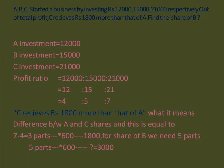C receives 1,800 more than A — this 1,800 is the difference between A and C's profit. In the profit ratio, the difference between A and C is 7 minus 4, which is 3. So 3 parts equal 1,800. For the share of B we need 5 parts. Since 3 parts equal 1,800, the relation gives us 600 per part, so 5 parts equal 3,000. The share of B is 3,000.